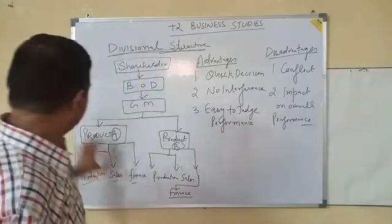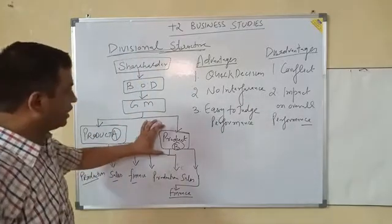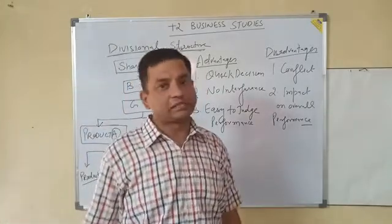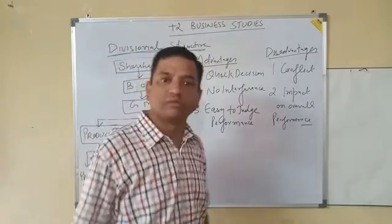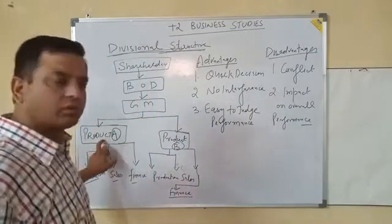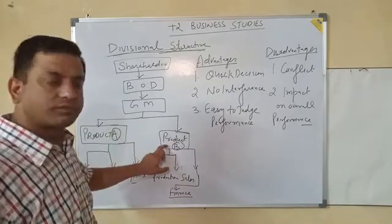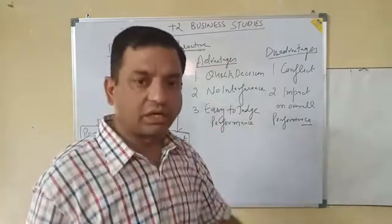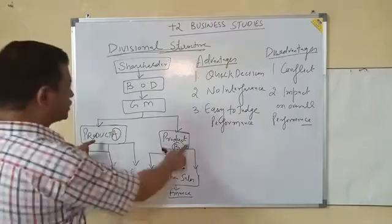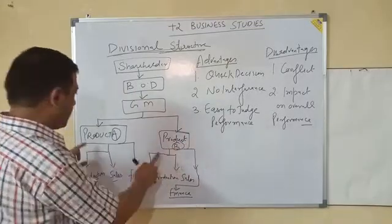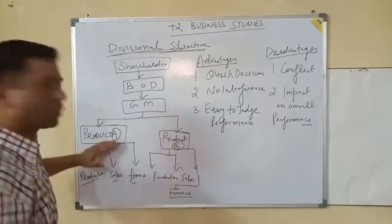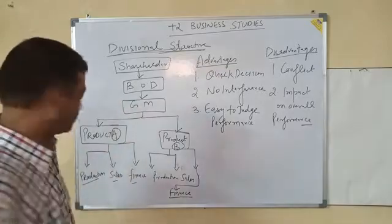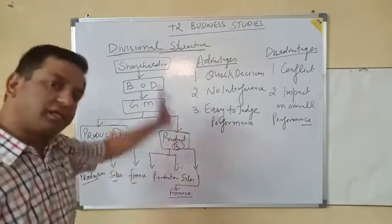You can take the example of Tata. Tata is dealing in automobiles and also in FMCGs — fast moving consumer goods. So one department is automobile and the second department is FMCGs. Each department is separately made by the company, and under these two departments, different functions are grouped — production head, sales head, finance head — as in the case of functional structure.